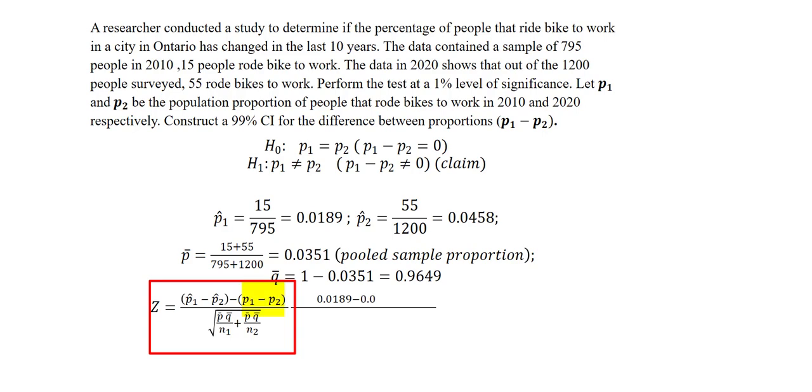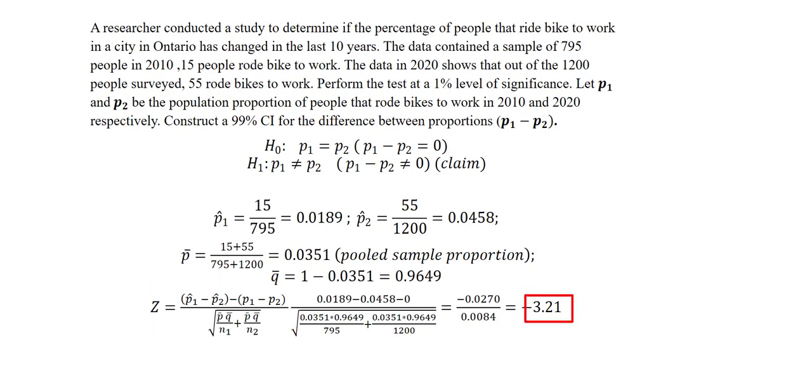The P1 minus P2 in this case will be 0 based on our hypothesis. Once I put all of these values into the formula I arrive at my test statistic which will be negative 3.21.